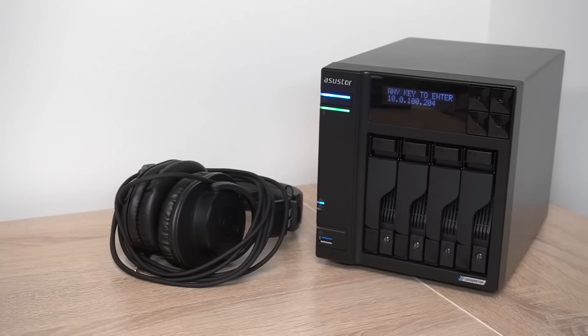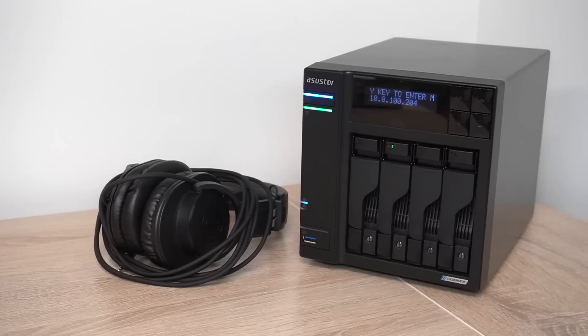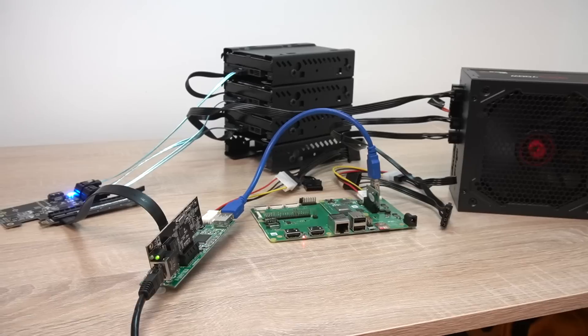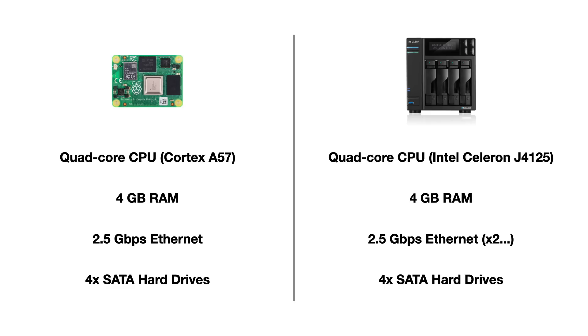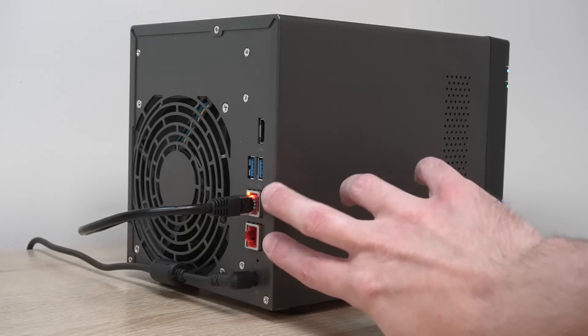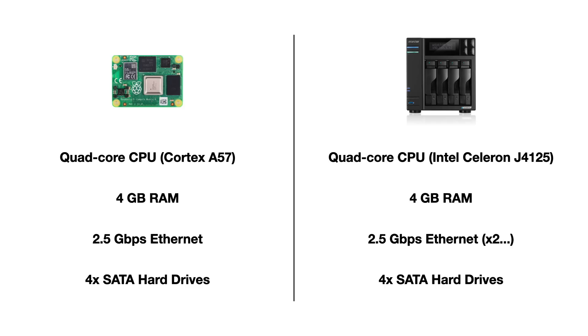In part one, I set up two NASes: an Asus Store NAS and a home-built Raspberry Pi NAS. Both of these machines have quad-core processors, 2.5 gig networking, and can hold at least four SATA hard drives linked together for network storage via RAID.